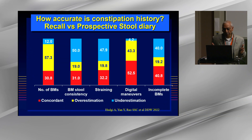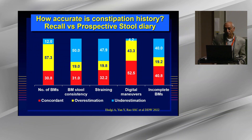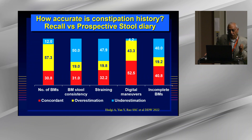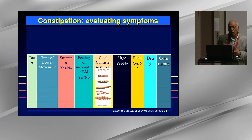We did a simple survey where we collected symptoms and asked patients to give their symptoms on a questionnaire, and then had them keep a prospective diary for one to two weeks. The bottom line: very poor concordance between what the patient tells us and what we find on a prospective diary. Looking at the number of bowel movements, only 30% of the time they are really accurate; bowel stool consistency the same; straining and use of distal maneuvers accurate about 50% of the time. So history per recall is generally inaccurate — but that doesn't mean we shouldn't get the history.